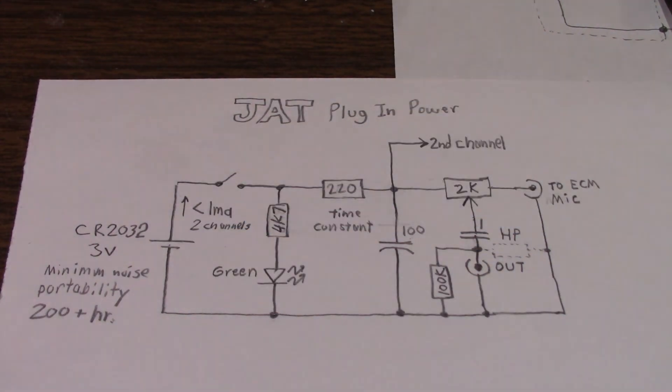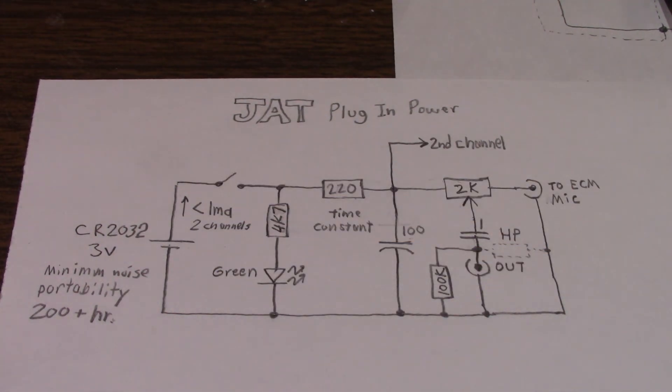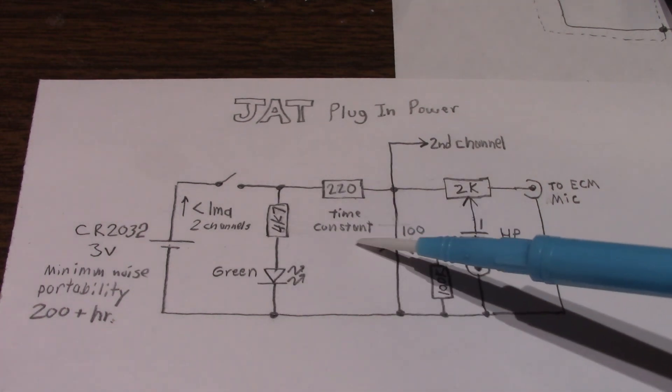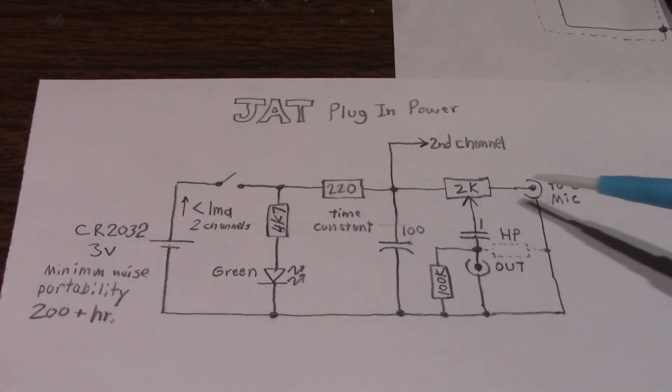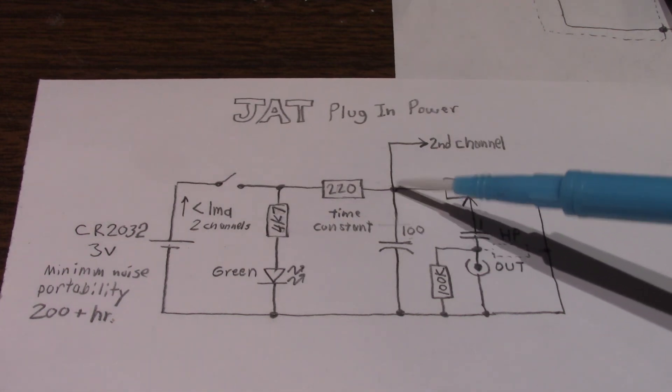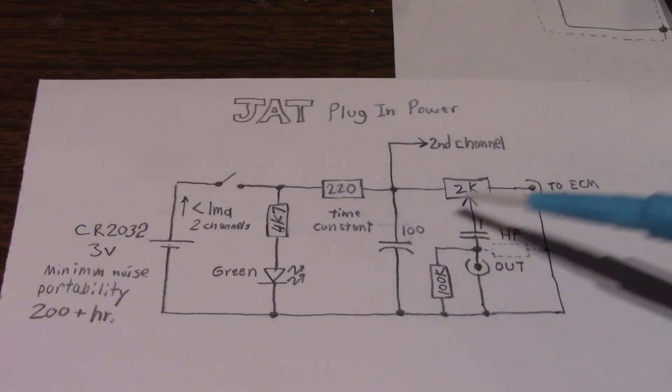Because it gently ramps up and down the current when you turn the thing on or off. And because these little coin cells have a significant internal resistance, I think these are around 50 ohms or so. And plus the time constant circuit's resistor adds a lot more.